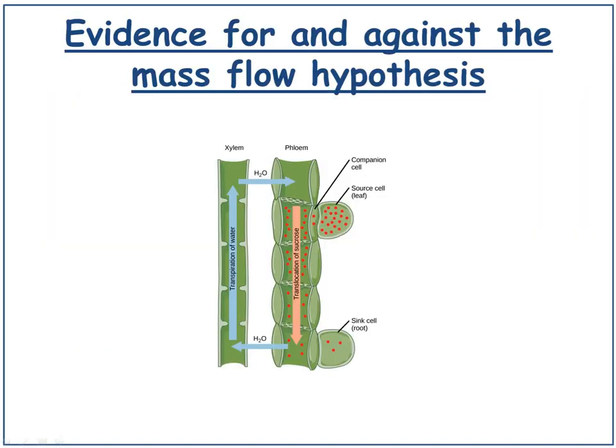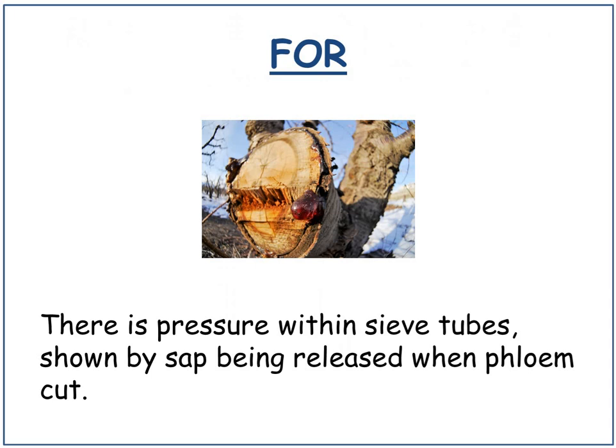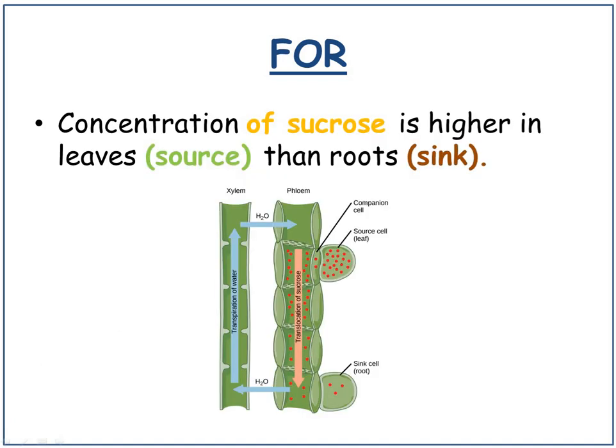Evidence for the mass flow hypothesis: there is pressure within sieve tubes, shown by the fact that if you pierce the phloem, sap is released when you cut it. The concentration of sucrose is higher in the leaves, or the source, than in the roots or the sink.